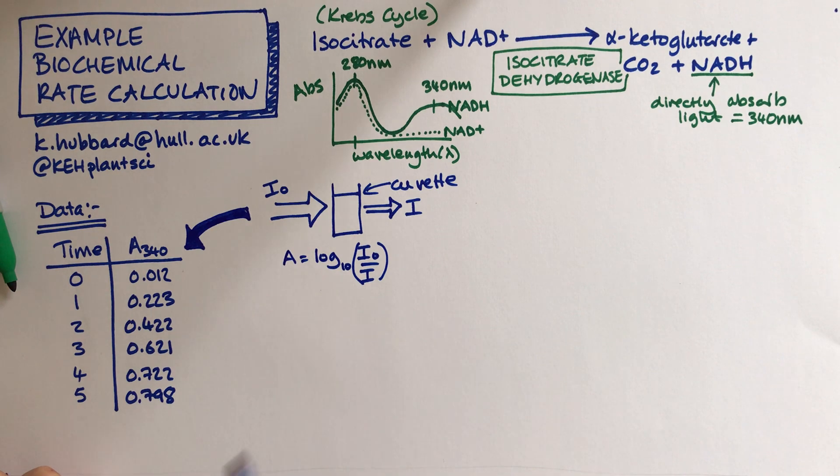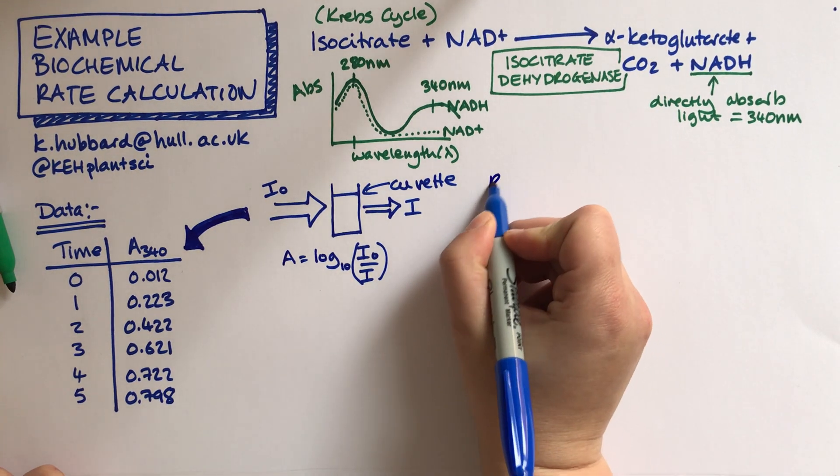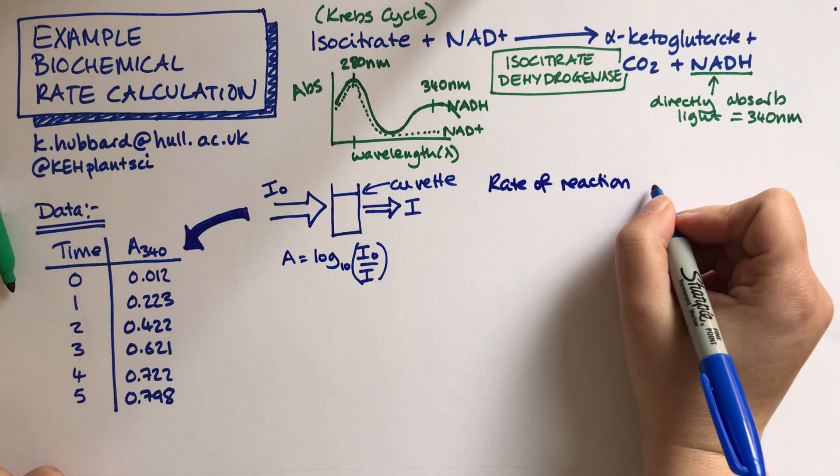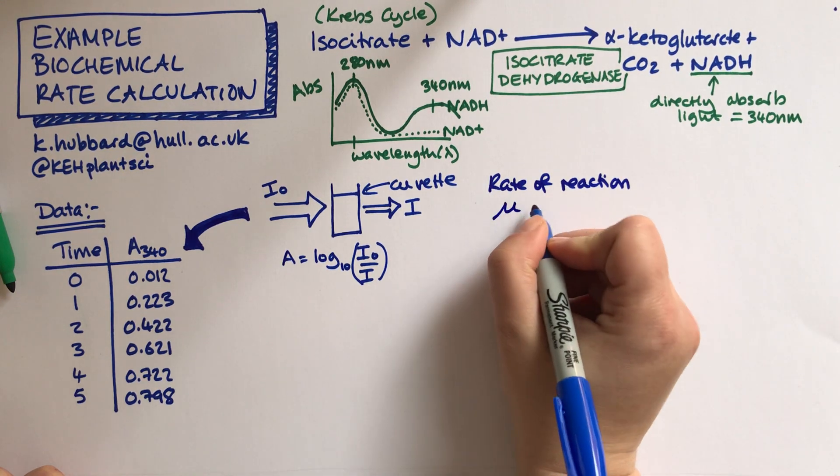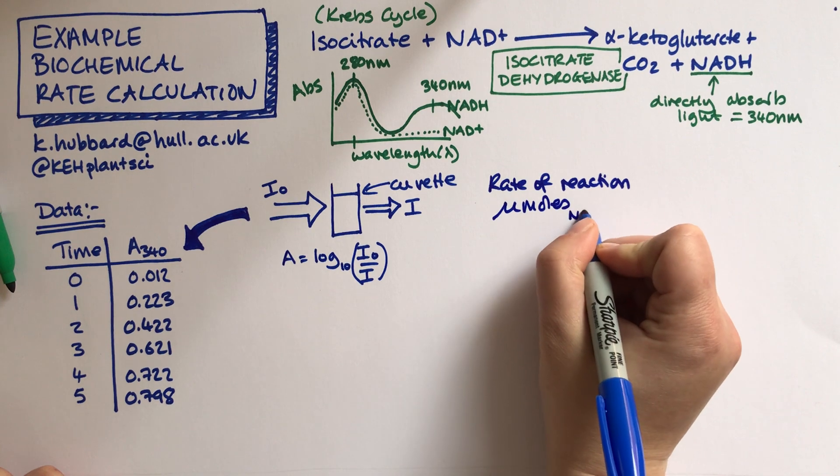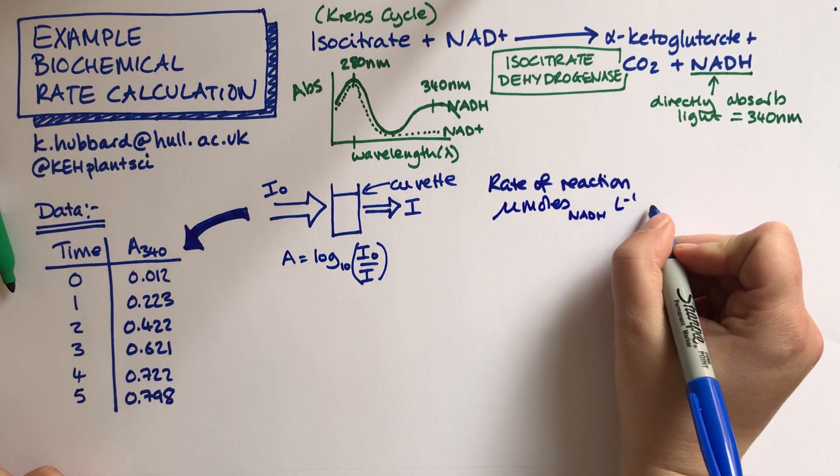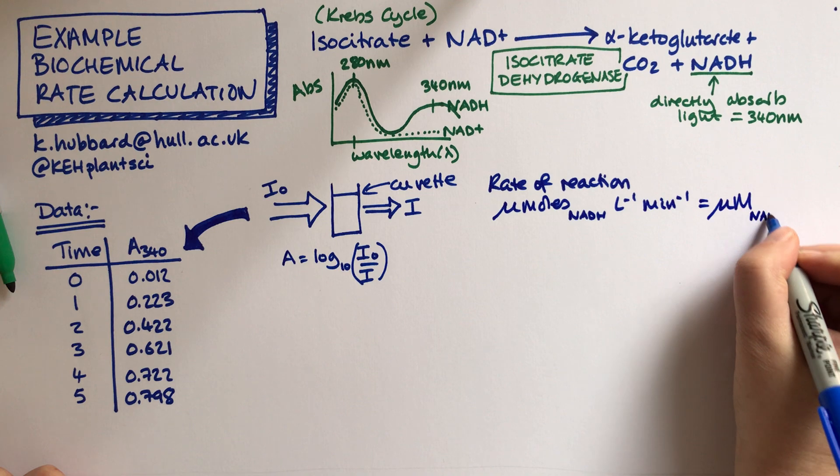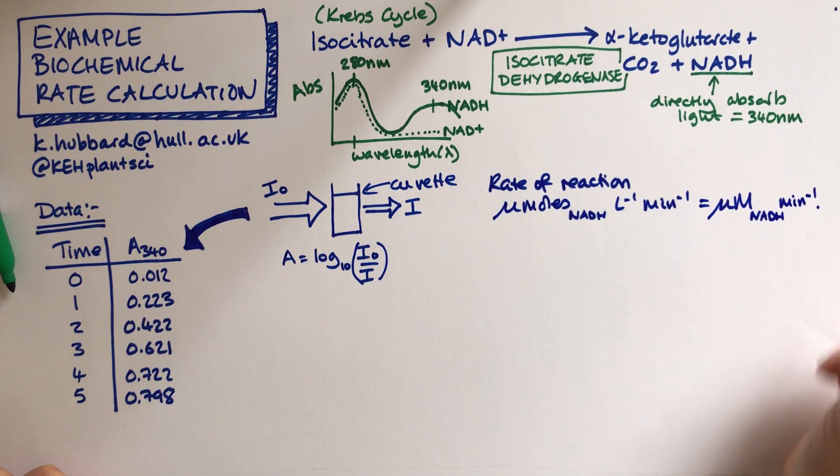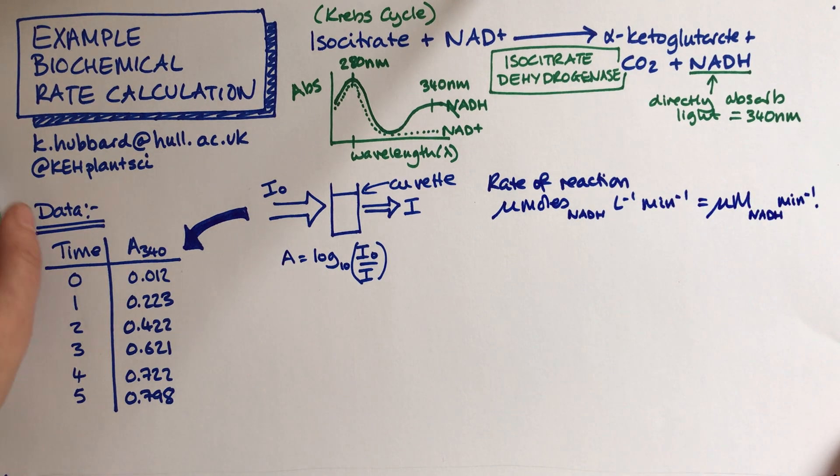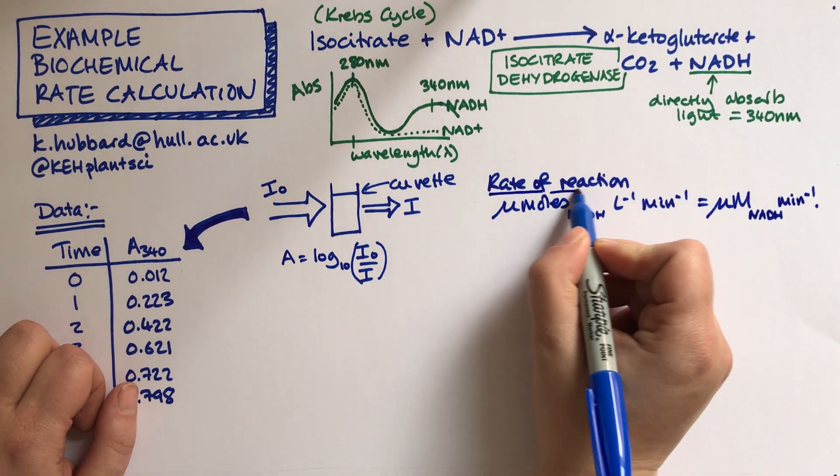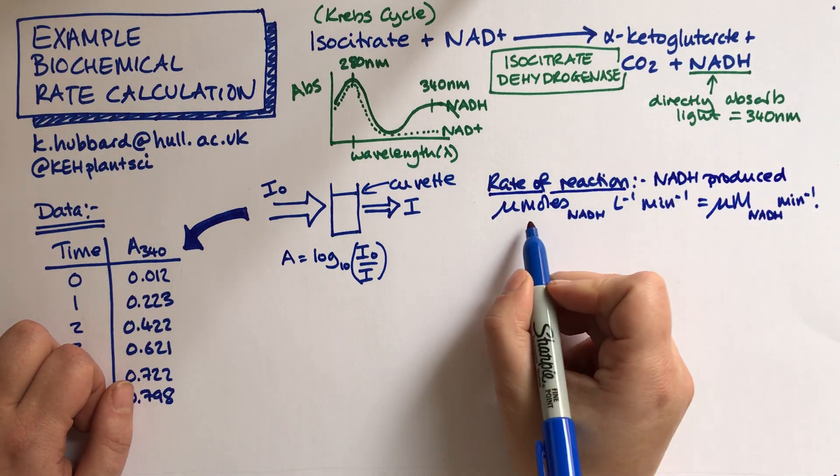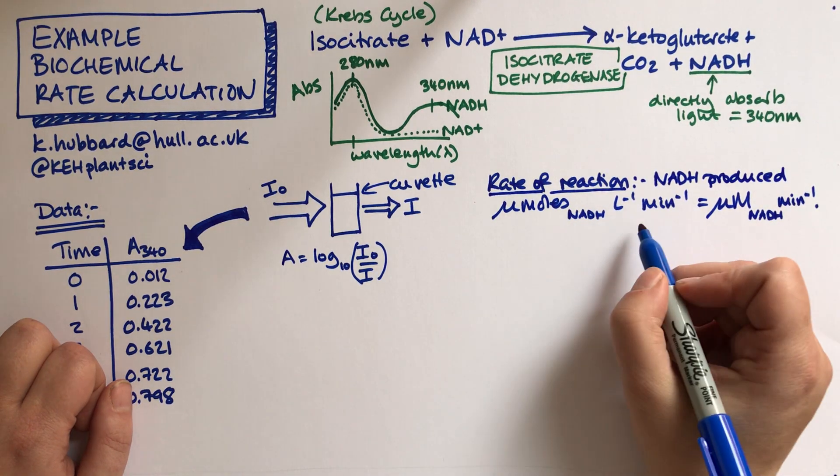So the question is what is the rate of reaction expressed as micromoles of NADH produced per litre per minute. So that's the same thing as just micromolar NADH per minute. If it's got time in it then that's a rate. So we want to find out the rate of reaction in terms of NADH produced in micromoles per micromolar per litre.